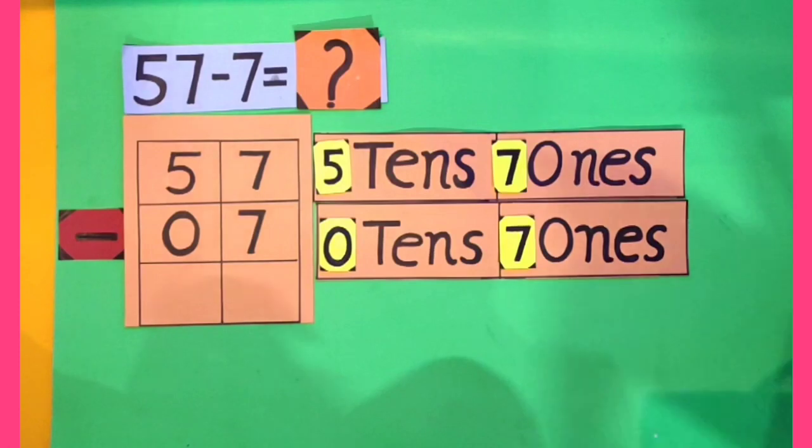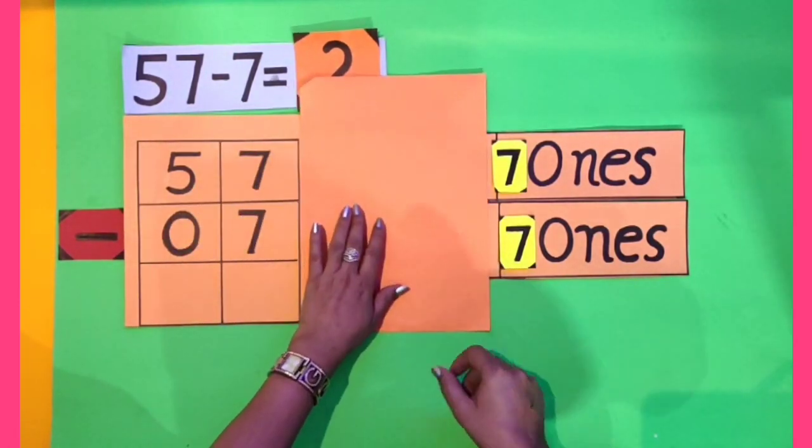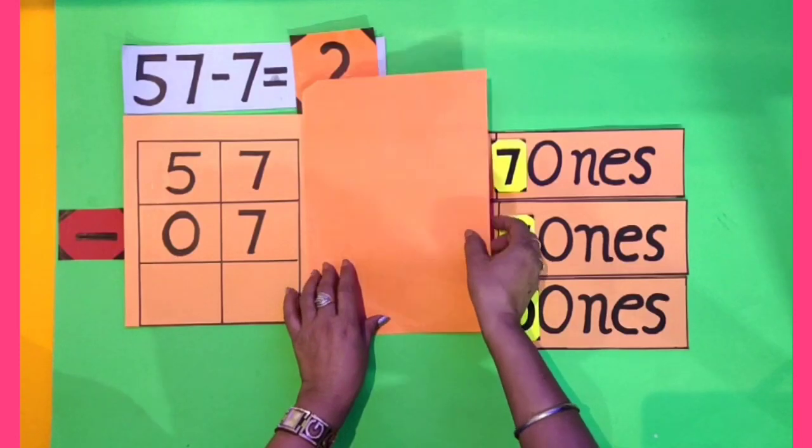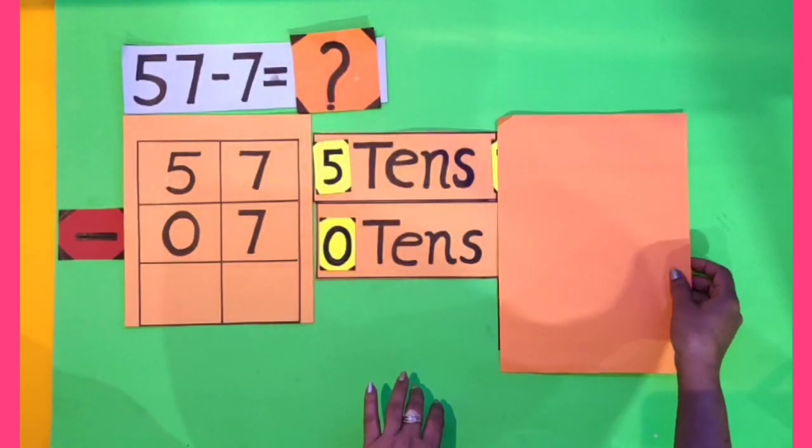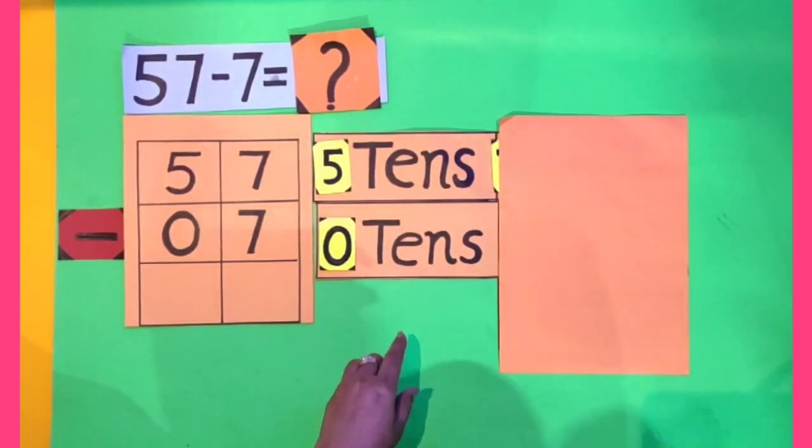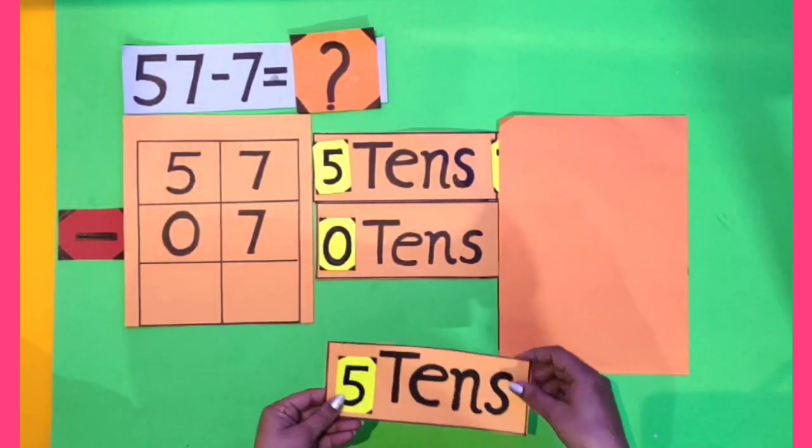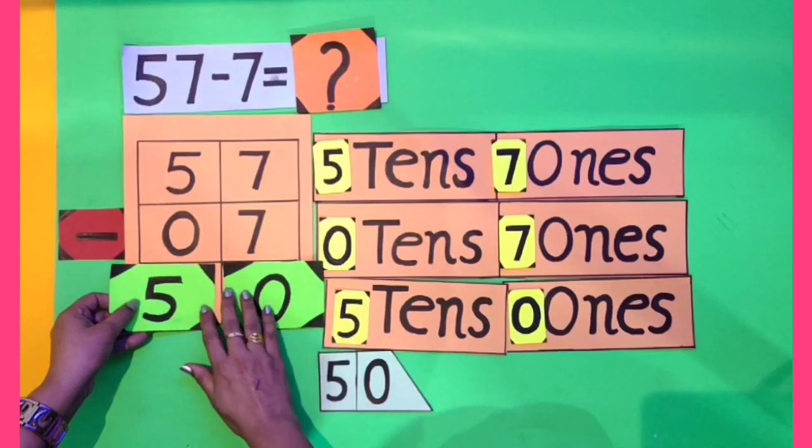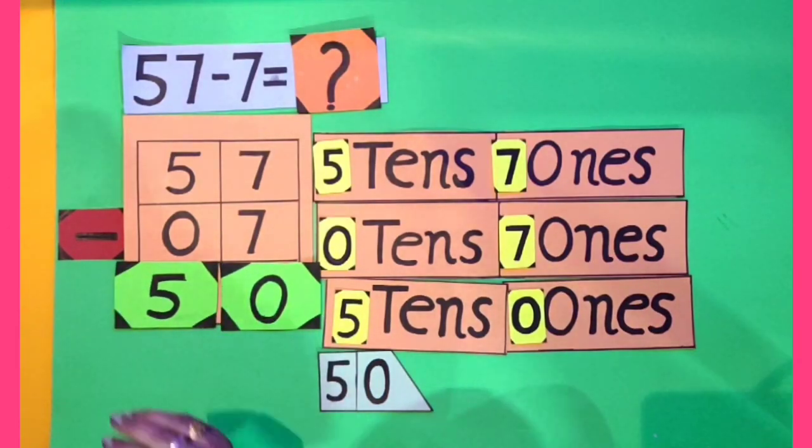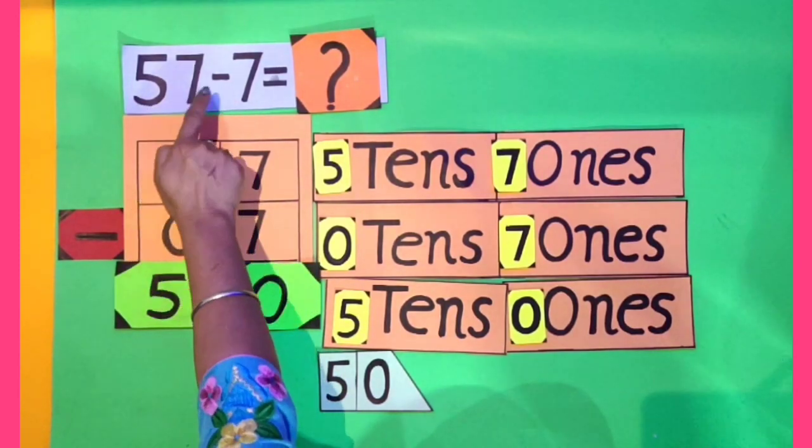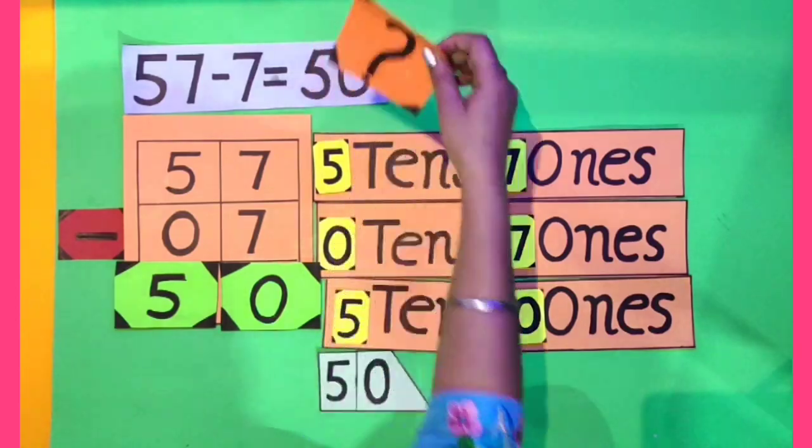Kids, let's subtract them separately. 7 ones minus 7 ones means 0 ones. Now let's see. 5 tens minus 0 tens, what we get? We get 5 tens. Here comes 50. It means by subtracting 7 from 57, we get 50. 57 minus 7 is equal to 50.